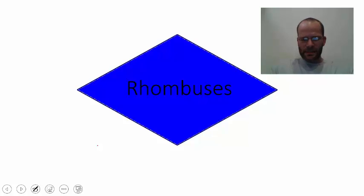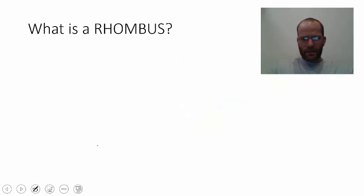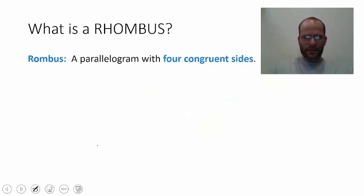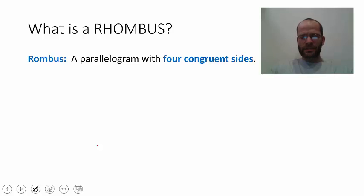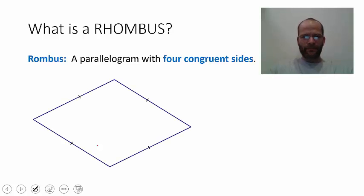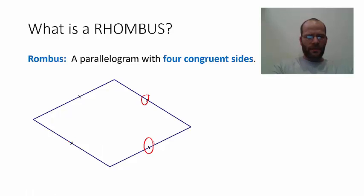Let's talk about rhombuses. A rhombus is a parallelogram with four congruent sides. So a rectangle has four congruent angles; a rhombus has four congruent sides. Here is a diagram of a rhombus — four congruent sides, pretty easy, that's the definition.